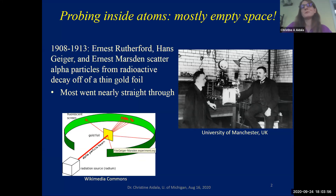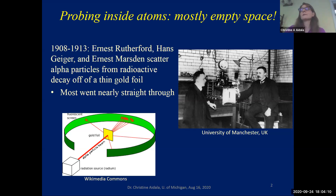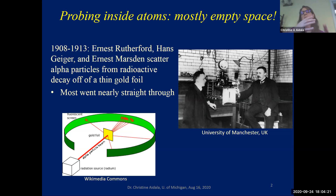Think aluminum foil, just a little more expensive. Most of those particles went nearly straight through, which was consistent with the prevalent ideas about the structure of the atom at the time — the so-called Thomson's plum pudding model — which said that positive and negative charges were basically randomly or homogeneously distributed throughout the volume of the atom.